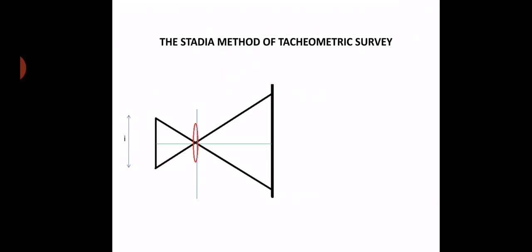The distance between the upper hair and the lower crosshair is small 'i'. The lower crosshair is A-dash, the middle crosshair is B-dash, and the upper crosshair is C-dash. The center of the lens is O, where the triangles meet. Capital F is the focus, X is the instrument center, U is the distance between the object glass and the leveling staff, and small d is the distance between the instrument center and the object glass. F is the focal length of the object glass, V is the distance between the object glass and the crosshairs, and D is the horizontal distance from the instrument center to the leveling staff — which is the distance we need to derive.